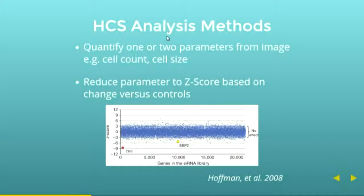How do we go about biological discoveries from these images? The usual analysis method is that one or two parameters are quantified from the image. That could be the number of cells that are present in the image or the size of the cells in the images. Then these parameters are reduced to a Z-score based on the change versus the control samples.